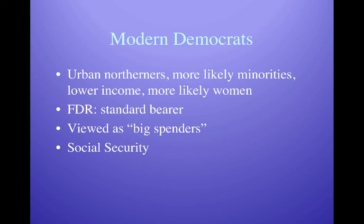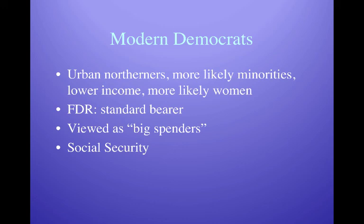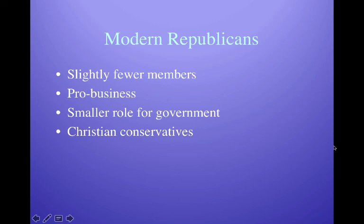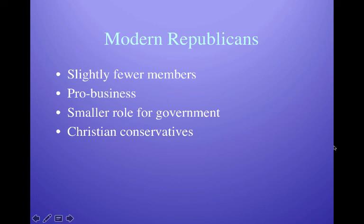Modern Democrats are more likely to live in cities, be minorities, lower income, and women — FDR is the standard bearer, and they're viewed as big spenders. Republicans are more conservative, tend to be pro-business, more powerful in rural areas, favor a smaller role for government, and tend to be more traditionalist in religion and outlook. And that is all for political parties — if you have any questions, let me know; otherwise I'll see you next time.